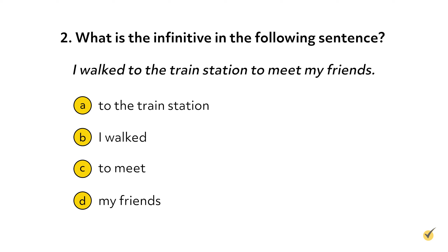Number two: what is the infinitive in the following sentence? 'I walked to the train station to meet my friends.' A) to the train station, B) I walked, C) to meet, or D) my friends. The correct answer is C. The infinitive 'to meet' is acting as an adverb describing the verb 'walked.' Though the phrase 'to the train station' starts with the word 'to,' it is a prepositional phrase, not an infinitive. An easy way to tell the difference is by looking for a verb — an infinitive contains some form of a verb, while a prepositional phrase does not.